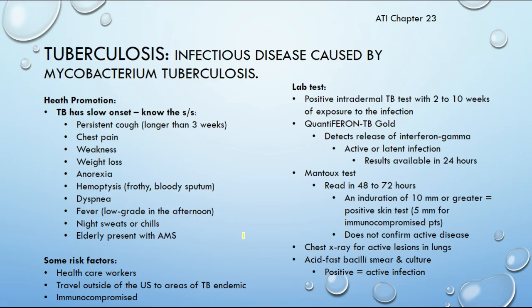For tuberculosis, symptoms include cough, weight loss, anorexia, bloody sputum, low-grade fever, and night sweats or chills. Those at risk include healthcare workers and those who go into areas with a higher incidence of TB. The Mantoux test is administered to students, but it does not confirm active disease because TB can lie dormant.